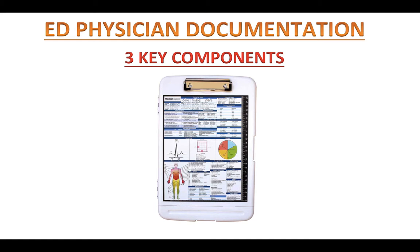If you want to code an ED record effectively and completely, you have to know how to extract the information from the record. And in order to do that, you must understand how the ED physicians document their records. There are three key components you would find on any ED record. We already learned it from the last video — let's see if you still remember what they are. If you want to be an ED coder or the best coder, you must know this.